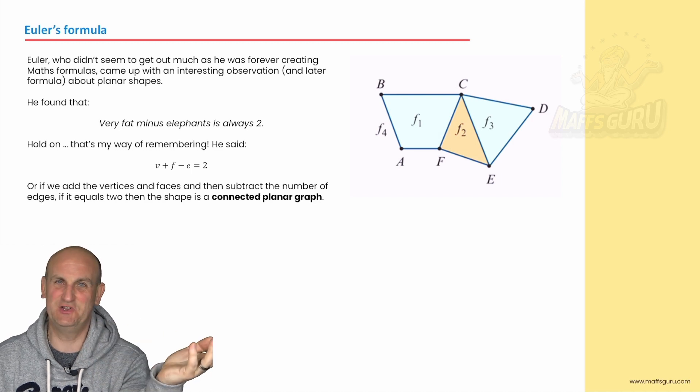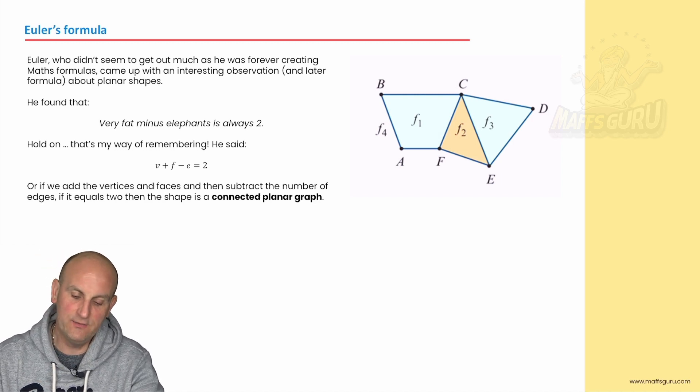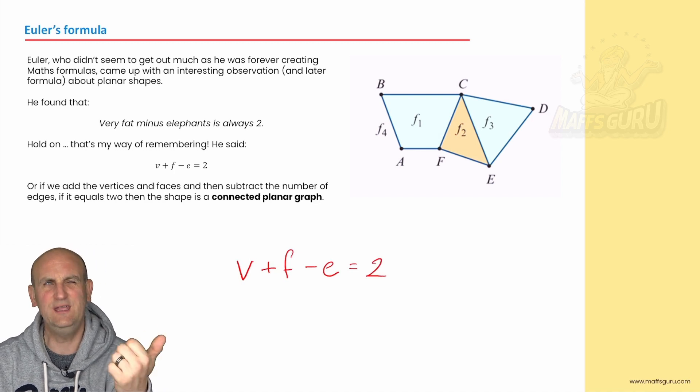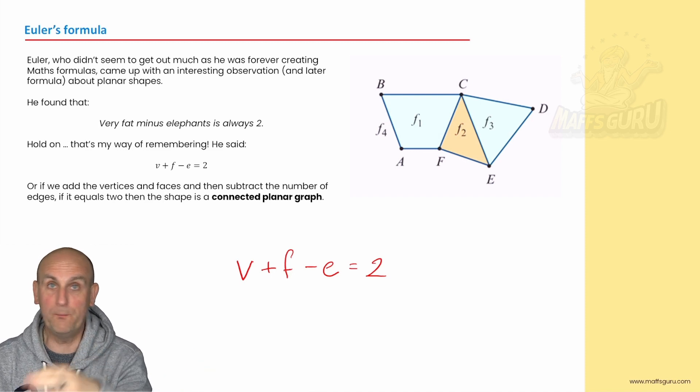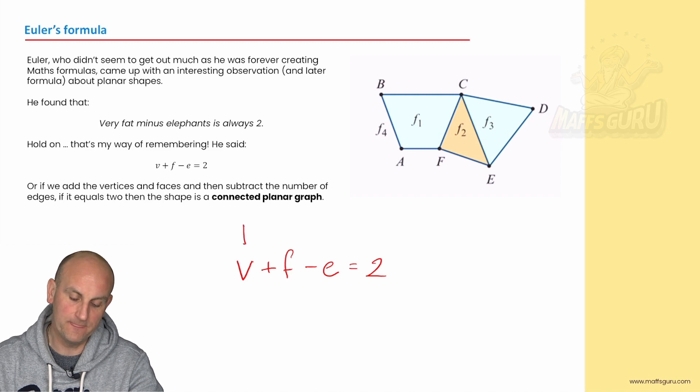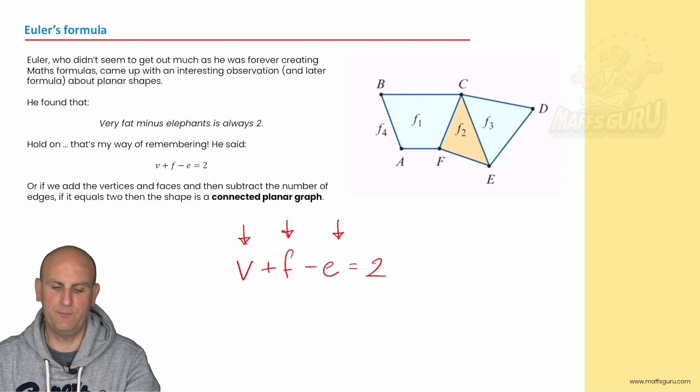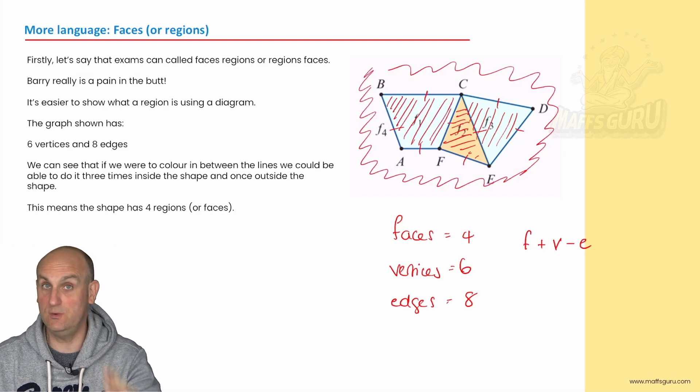Euler came up with a formula that said hold on a moment, I can prove that for planar graphs the following is true. Very fat elephants is 2. No he didn't actually say that. That's my view of it. He said that if I took the V and added it to the F and took away the E I got 2. V vertices, F faces, E edges. My goodness. And what he found was that for all planar graphs, if he added the number of vertices to the number of faces and took away the number of edges it was always 2 with planar graphs.